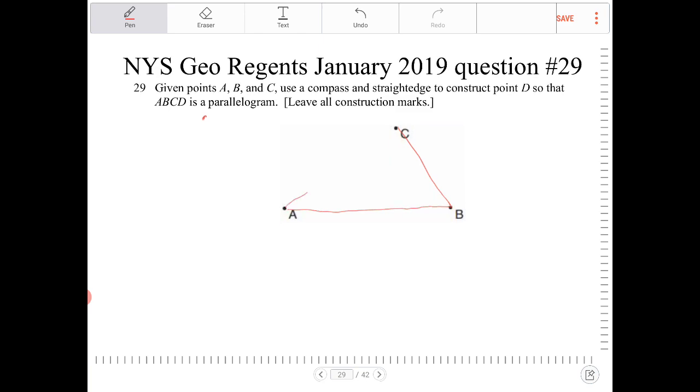I'm going to connect these three points together, and I want to identify where that point is on the other side. What I do know is on a parallelogram, opposite sides are supposed to be congruent.